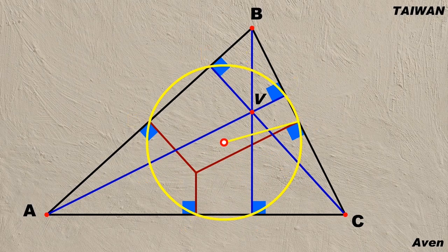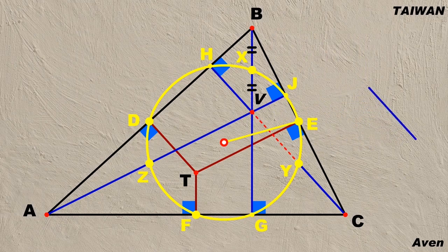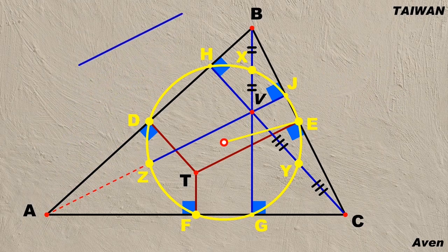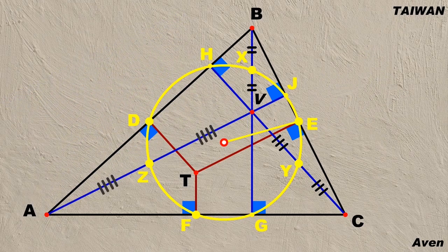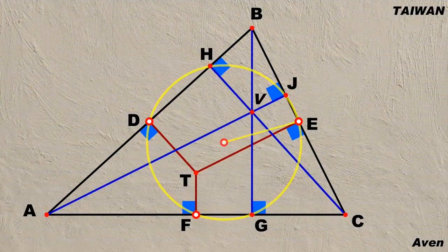The circle is therefore called a nine-point circle. The length of BX is equal to XV, and VY is equal to YC, and AZ is equal to ZV. How can we construct the nine-point circle?